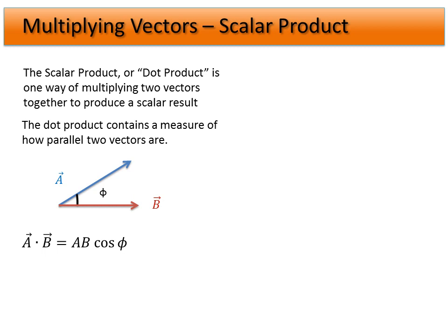This can give us a lot of information, but sometimes there's an easier thing to calculate. If we know the x, y, and z components, we can figure out what the dot product is. This value is actually exactly equal to a component form: take the x component of the first vector times the x component of the second vector, add it to the multiplication of the y components, plus the multiplication of the z components. All of these are magnitudes — there's no direction associated with it, but we do have to deal with the components.